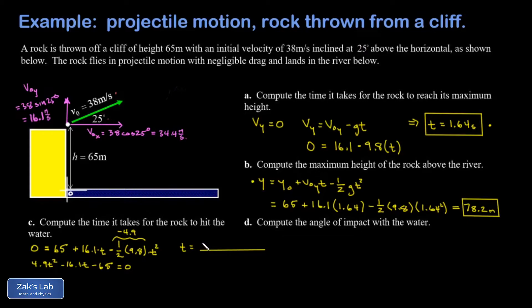So t equals negative b (that's the coefficient of the linear term) plus or minus square root of b² (so 16.1 squared) minus 4 times 4.9 (that's a) times c which was negative 65, all divided by twice a which is 9.8.